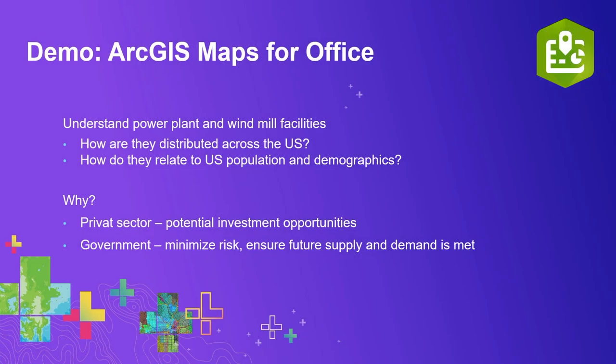Shannon is going to walk us through a demonstration of what I just talked about. In this scenario, she's going to look at power plants and windmill facilities across the U.S. — basically looking at how these things are distributed and how they relate to U.S. population and demographics. This is something that a private company might look at for investment, or a government entity for understanding supply, demand, and risk.